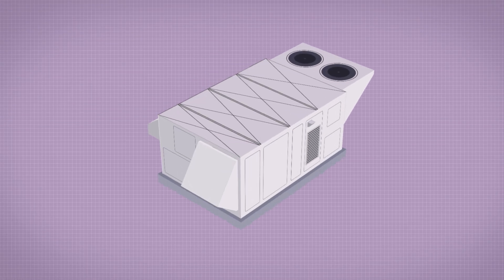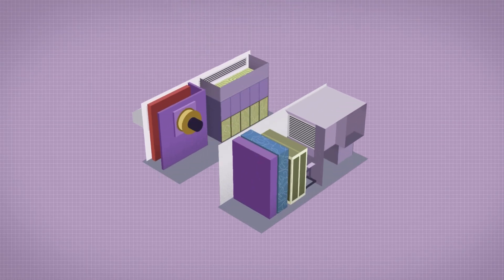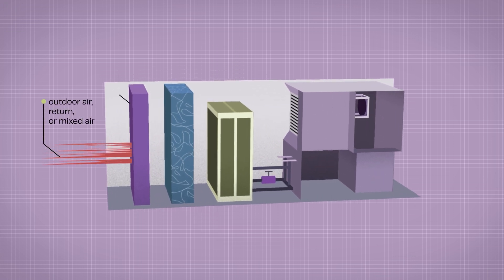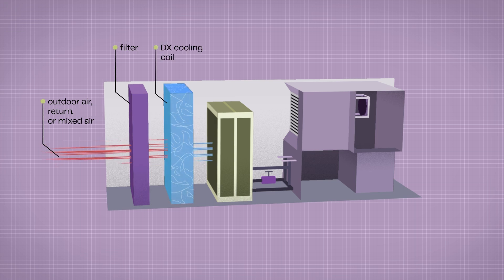The Arc2Dry unit consists of two air tunnels, supply and regeneration. On the supply side, outdoor, return, or mixed air enter the unit and is cooled by a DX cooling coil. This drops the temperature of the air.